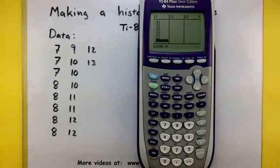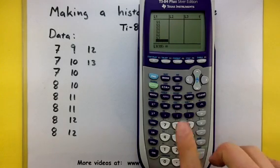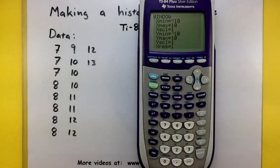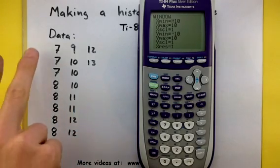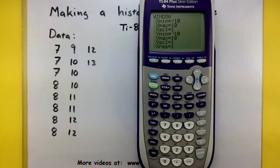Once you have all the data entered in, we want to start setting up the calculator so it can display our histogram correctly. Press your WINDOW key to see what your window is set at. The X values, we want to represent the values of our variables. So, if we take a look at our data, we're using variables between 7 and 13.